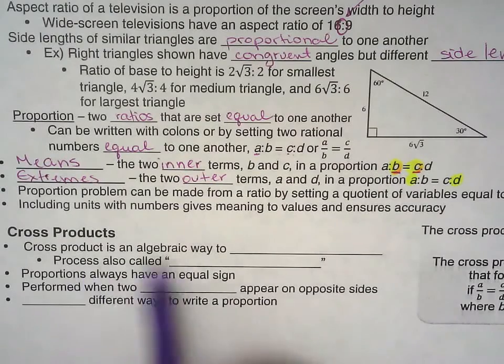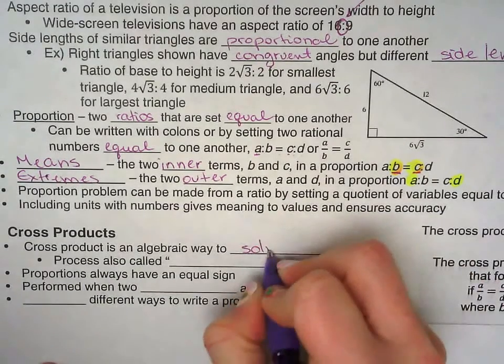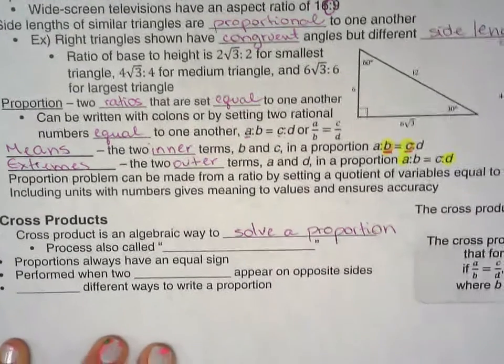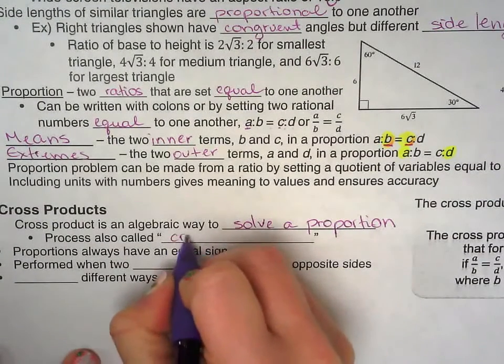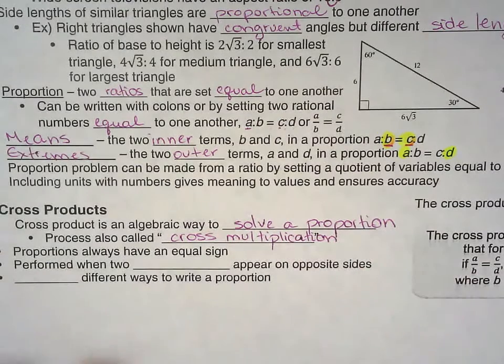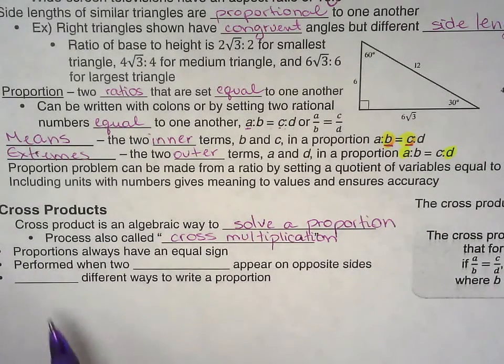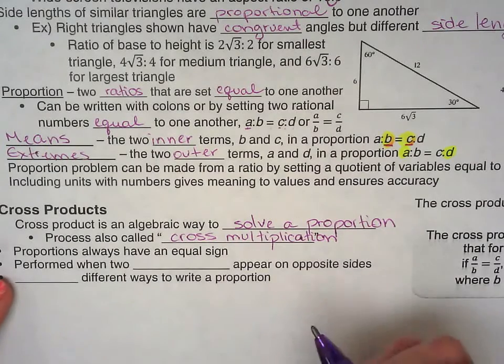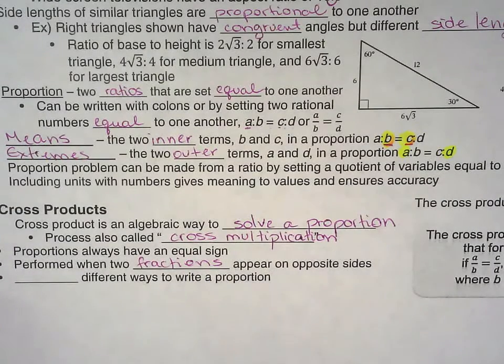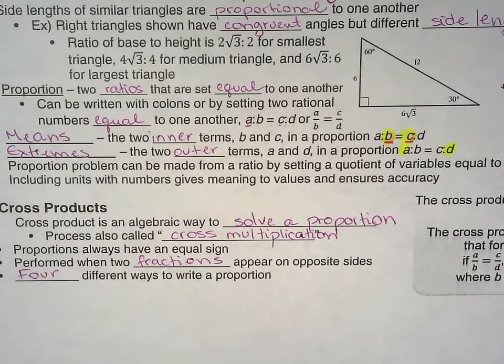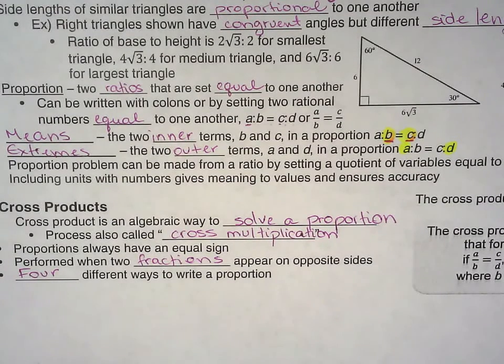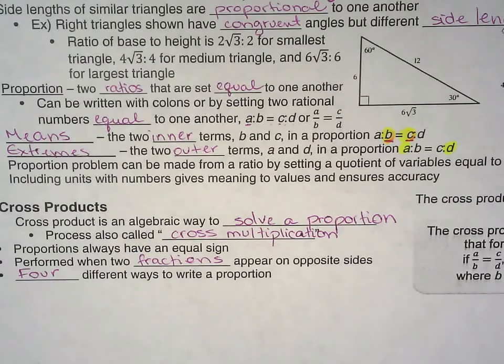Cross products. It's an algebraic way to solve a proportion. Most of you had done this already and you probably heard this being called cross multiplication. Everybody knows how to cross multiply. Proportions always have an equal sign and they're performed when two fractions appear on opposite sides.